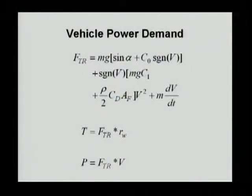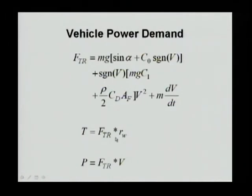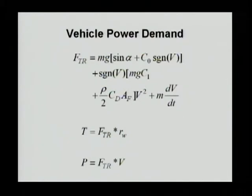The vehicle power demand must satisfy these three different resistive forces. Besides that, we also must satisfy acceleration, which in fact is the most needed force among all. The summation of vehicle power demand includes gravitational force, rolling resistance, aerodynamic resistance, and acceleration. Once you calculate the total force needed to drive the vehicle, you can calculate the torque and power needed at the wheel. This is the net power need; actual powertrain power must also account for component efficiency.